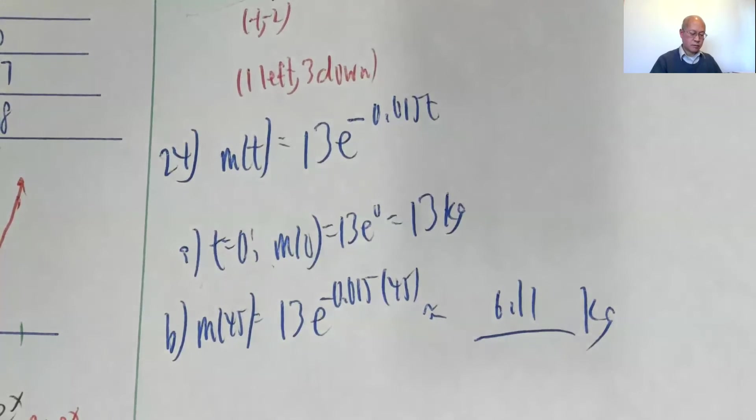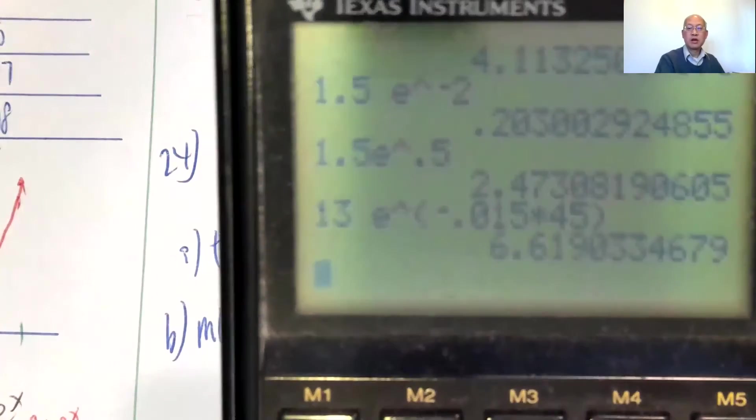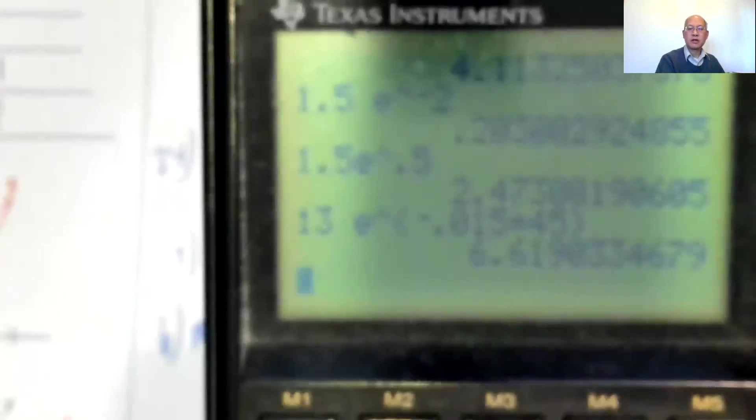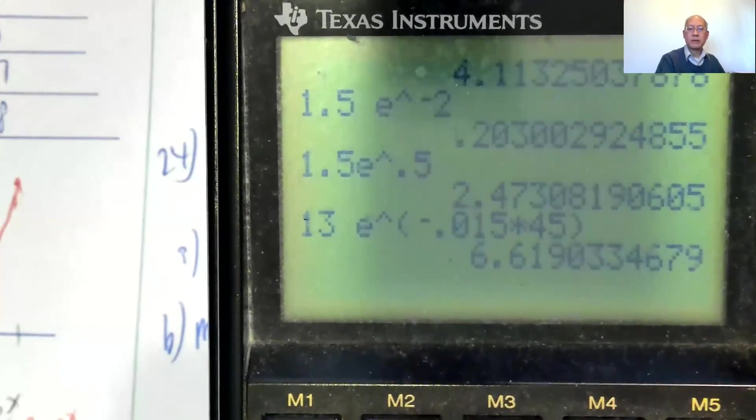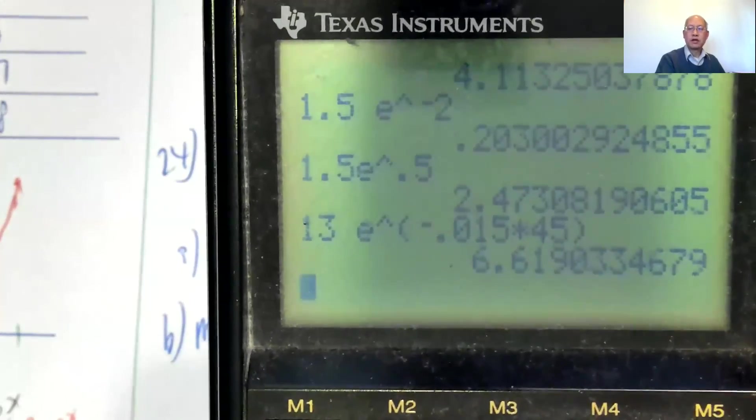13, 13 second function, e to the e to the parenthesis, negative 0.015 times 45. Okay, 13 e to the, get this thing in focus here, negative 0.015 times 45, 6.619.